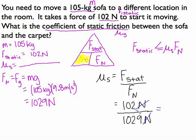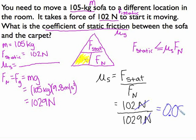Another thing about the coefficient of static friction: it's always going to be a number less than 1 — always a small number. So when you're doing your lab, if you get a coefficient of static friction that's more than 1, you did something wrong. When I put this in the calculator, I got 0.099. You don't have to have any units — it feels like the number is naked without units, but that's how it's supposed to be. And that's your answer for calculating static friction.